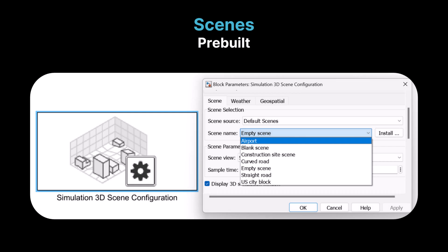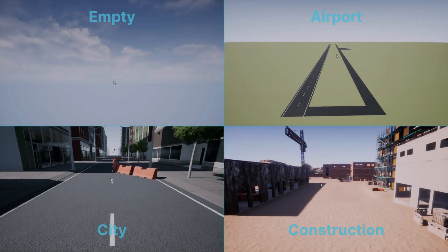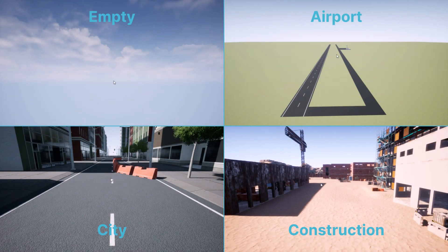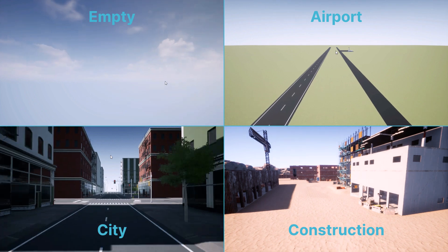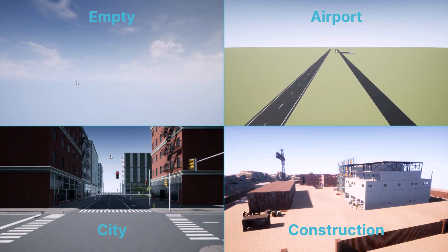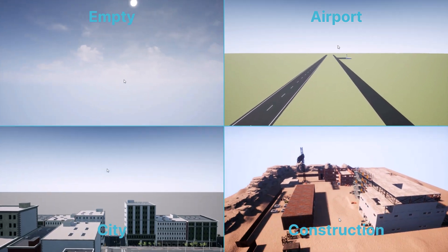First, we will introduce the Simulation 3D scene configuration block to create and configure 3D scenes. For the scene source, we can select default scenes, which provide a selection of pre-built scenes to choose from. Here you can see how the pre-built scenes appear, including options like the empty scene, airport, city block, and construction site.